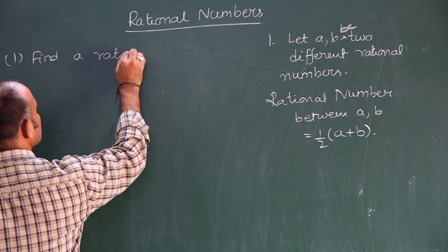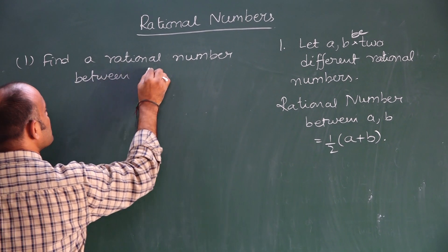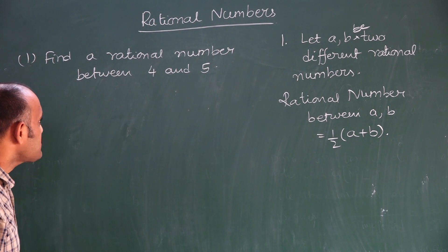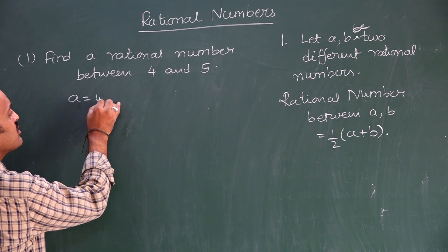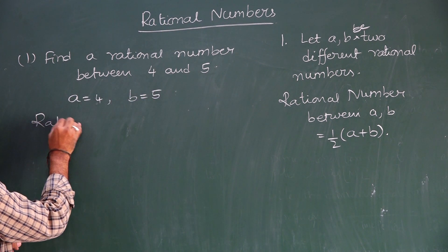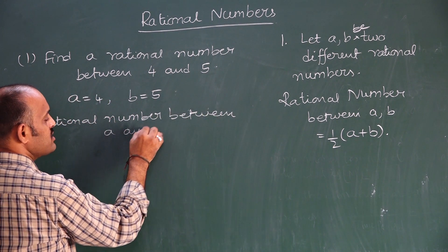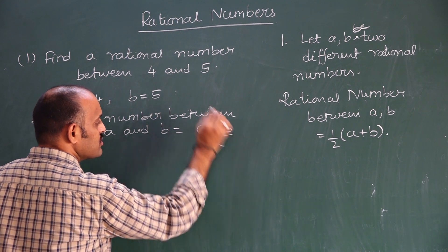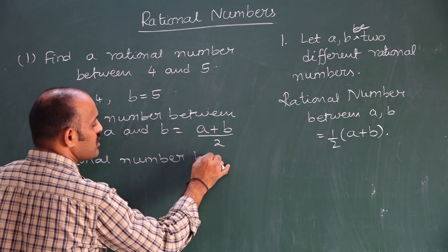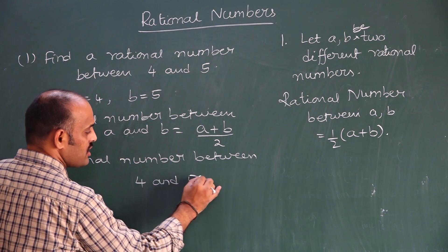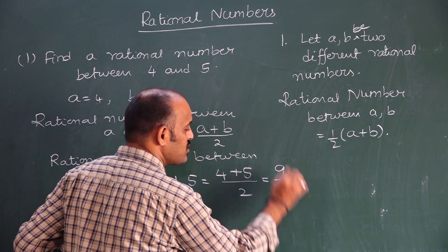Find a rational number between 4 and 5. Here A is equal to 4, B is equal to 5. The rational number between A and B is A plus B by 2. Therefore, the rational number between 4 and 5 is 4 plus 5 by 2. Four plus five is 9, so the answer is 9 by 2.